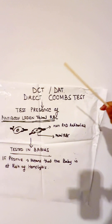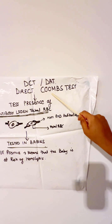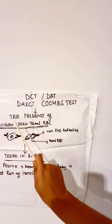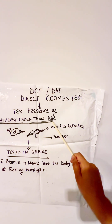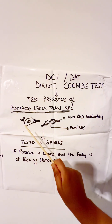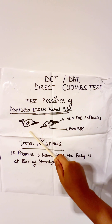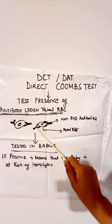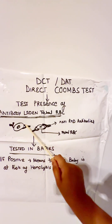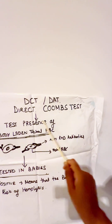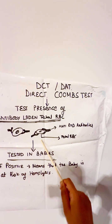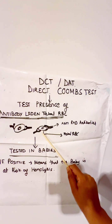In DCT — Direct Coombs Test, also called Direct Antiglobulin Test — we test for the presence of antibody-laden fetal RBCs. These antibodies have crossed the placenta and started attaching to the baby's RBCs. So the fetal RBCs are now laden with the mother's antibodies, and that is what the DCT checks for.